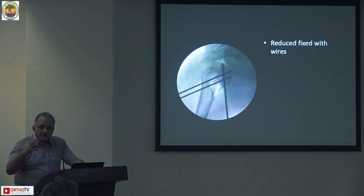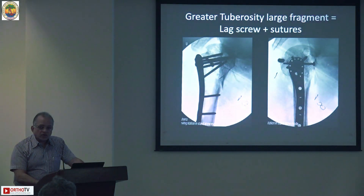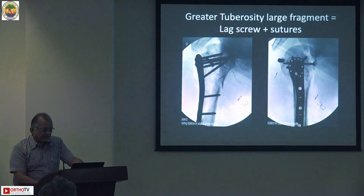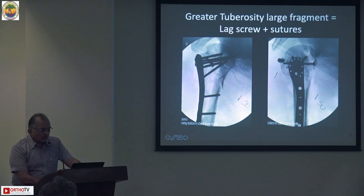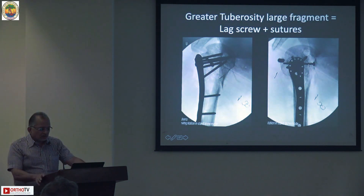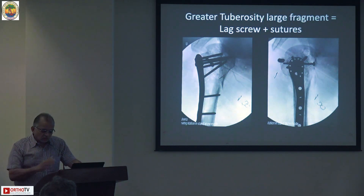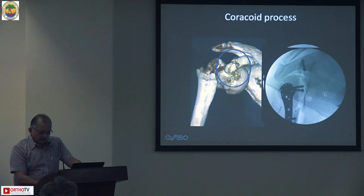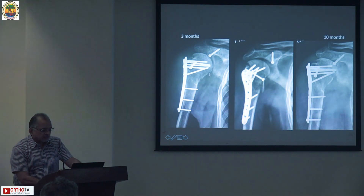A joystick in the humeral head is very useful so that you can manipulate the head fragment. Use a threaded pin, not a Steinmann pin, which will core out the cancellous bone during manipulation. The head was reduced with the help of temporary K-wires and then substituted by a plate. They all require a long anchor screw, particularly in osteoporotic bone; suturing the tuberosity is not recommended - a screw that traverses a longer diameter is preferred. The coracoid process can then be additionally fixed with a screw.